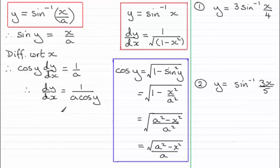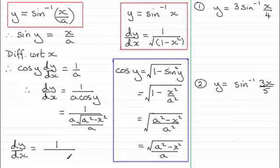So I can substitute this into here as being 1 then, all over a times the root then of a squared minus x squared, and that's all over a. The a's cancel out, and that leaves me with my final result, and that is that dy by dx equals 1 then, all over the root of a squared minus x squared.